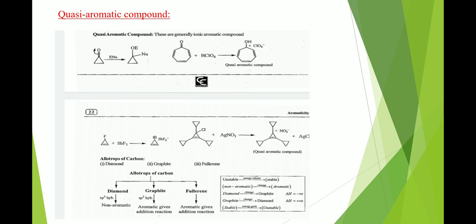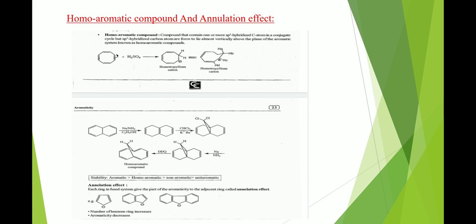Quasi-aromatic compounds are generally aromatic in nature. If a compound is attacked by a nucleophile or by an acid, it becomes ionic, and these types of compounds are called quasi-aromatic. Carbon exists in three allotropic forms: diamond, graphite, and fullerene. Diamond contains sp3 hybridized carbon atoms so it is non-aromatic, since aromaticity requires sp2 or sp hybridized carbons. Graphite and fullerene are both aromatic in nature.